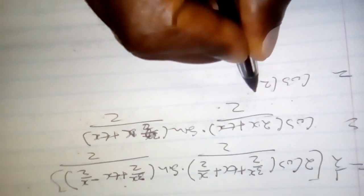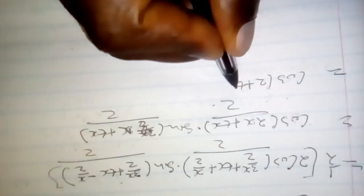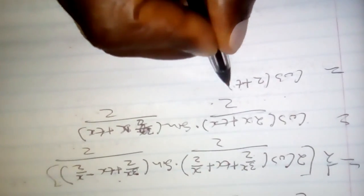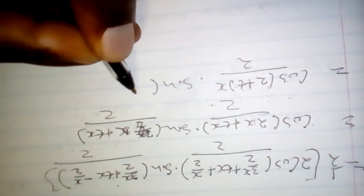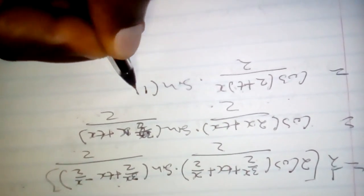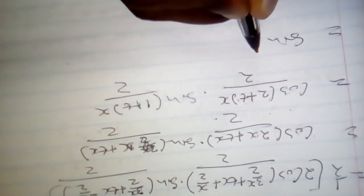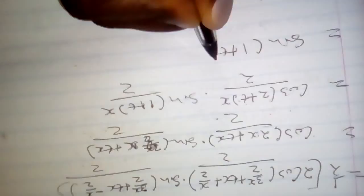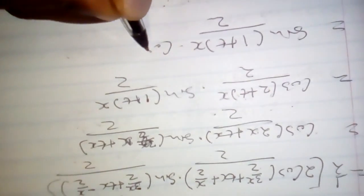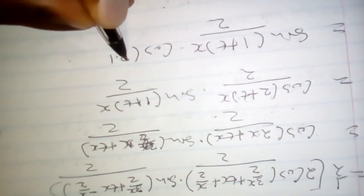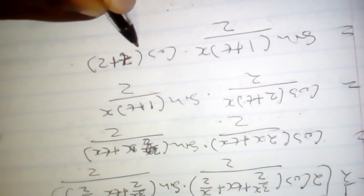Now we are having cos(2 + t)x/2 times sine(1 + t)x/2. Now this is the same as sine(1 + t)x/2 times cos(2t + 2)/2 x.